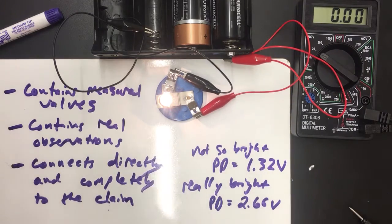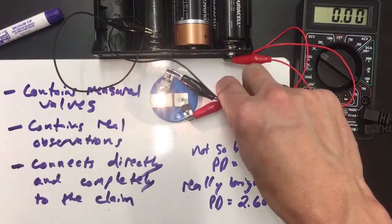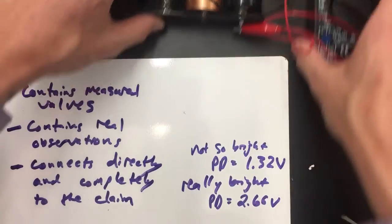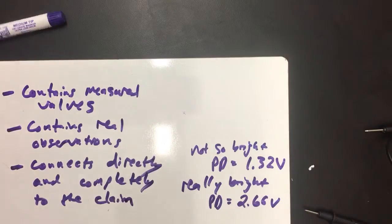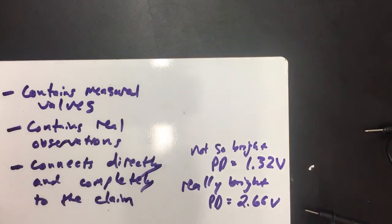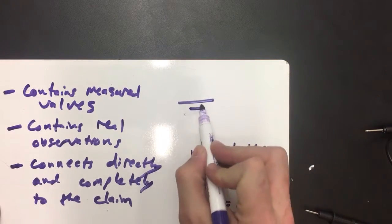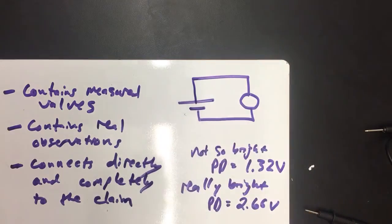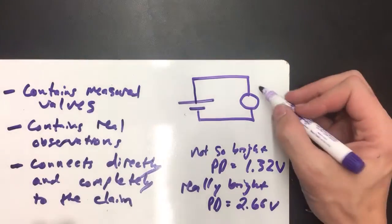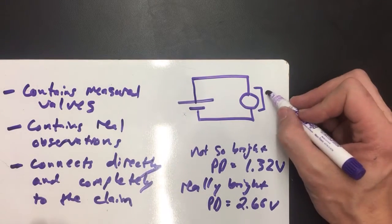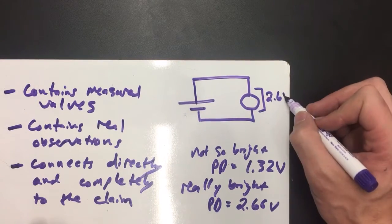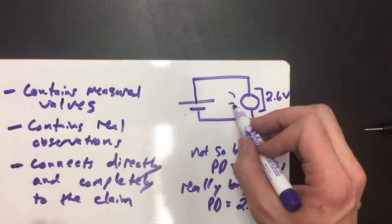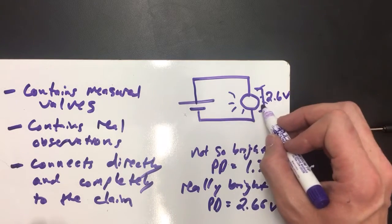One last thing that I haven't done that I also need to do, I'm going to move the bulb out of the way for this, is I need to show a diagram. So, for example, that diagram could look like that, a very simple diagram, but I would want to annotate maybe 2.6 volts and show that the bulb is super bright or something like that.